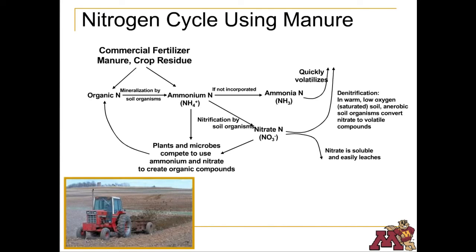In nitrate form, it can leach through the soil profile and into the groundwater. Nitrate can also be converted into nitrogen gas and be lost to the atmosphere through denitrification. Nitrogen is also removed from the soil when the plant or grain from the plant is harvested.